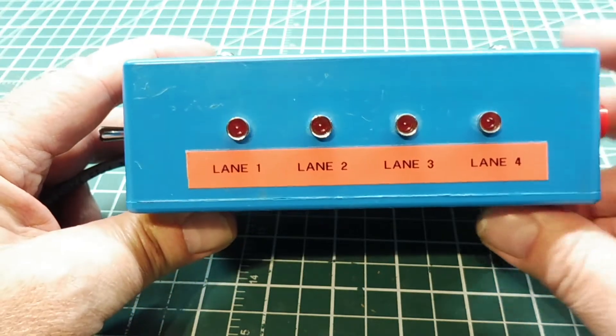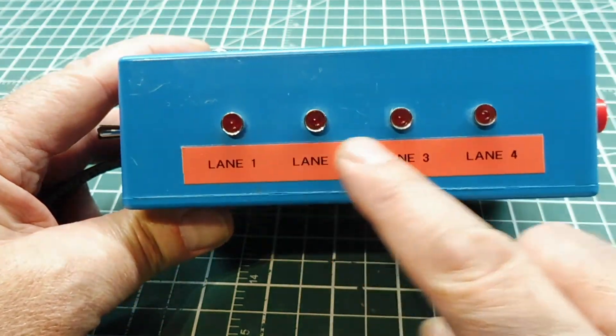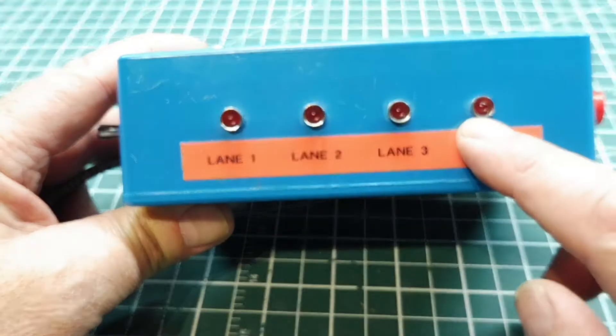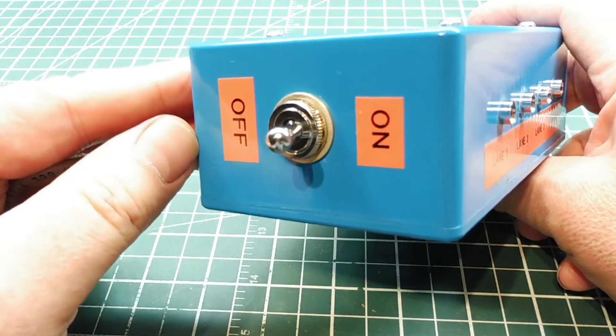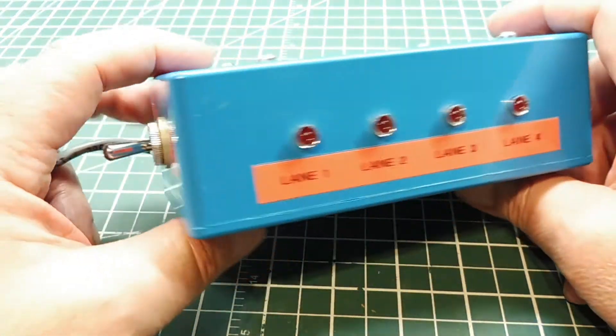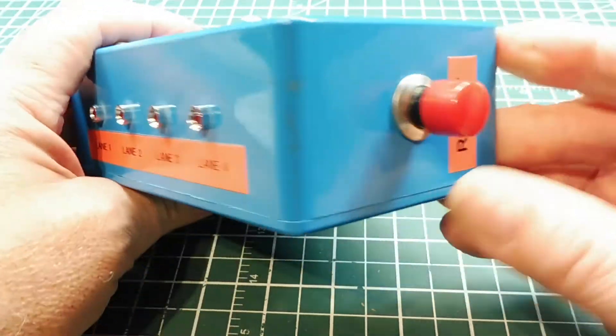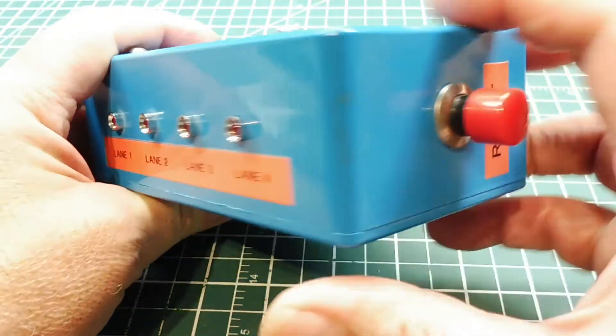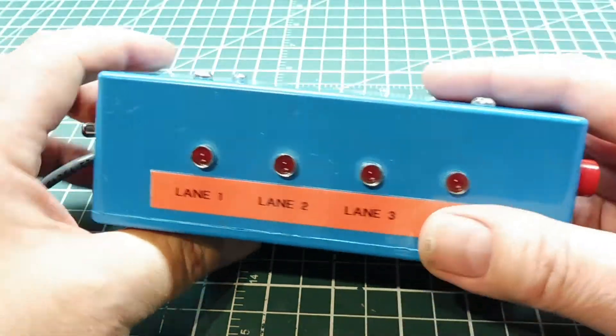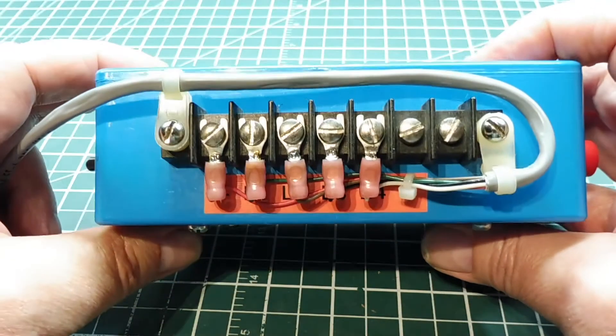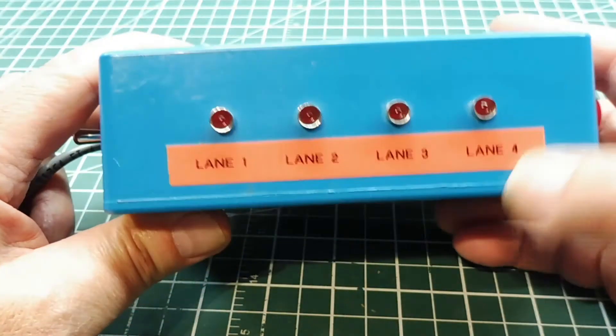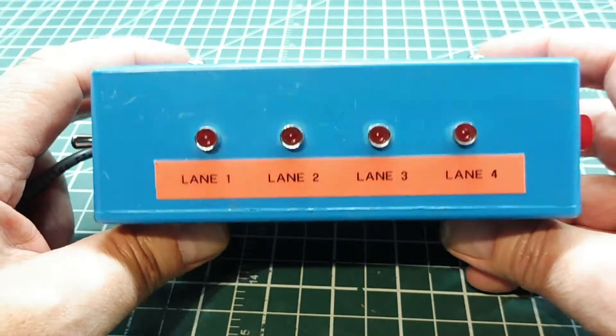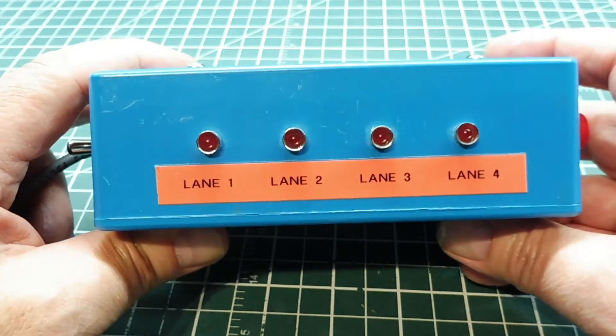Now this is for a four-lane track. You can see there's four indicators which indicate the winning track. On the side I got an on-off switch and it's powered by nine volts with a nine volt battery inside the box. On this side is my reset switch which resets the display after every race, and on the back is a terminal strip to hook up to the sensors on the track. So it's a pretty simple box, it's easy to build. I'll power it up and demonstrate how it works.